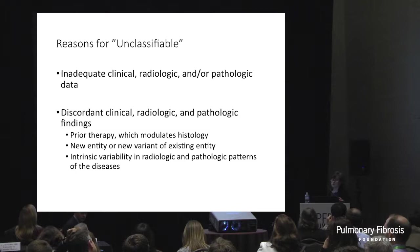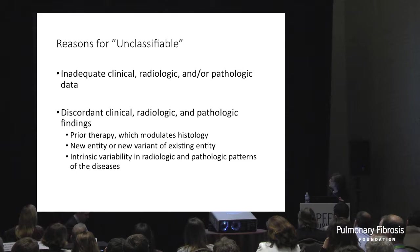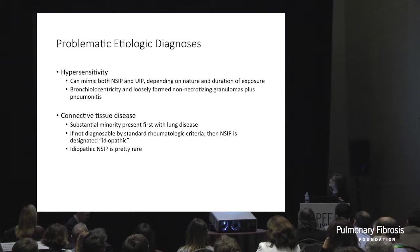Discordant findings may relate to prior therapy — inflammation, for example, will sometimes disappear from tissue if patients have been treated with anti-inflammatory therapy before the biopsy. New entities or new variants may cause variations in appearance, and these diseases are often heterogeneous, as we saw in the radiology talk. The other reason for unclassifiable IIP is that in the long run, most of those patients turn out to have some variation on connective tissue disease.